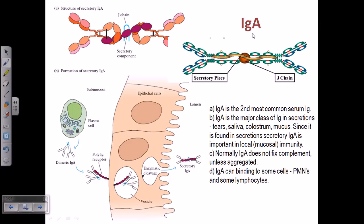IgA is the second most common serum immunoglobulin. It is a monomer but can form a dimer, and it can only form a dimer when it is secreted. It can be found in secretions like tears, saliva, colostrum, and mucus. Normally, IgA does not fix any complement.